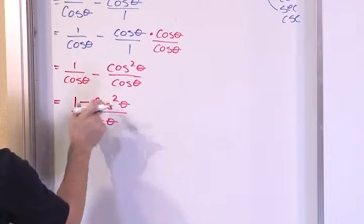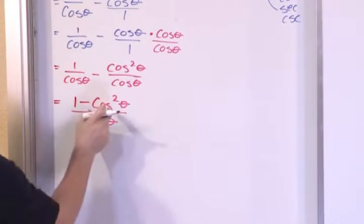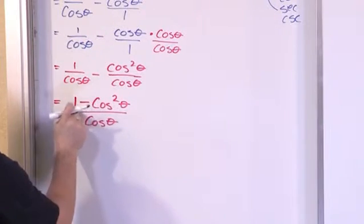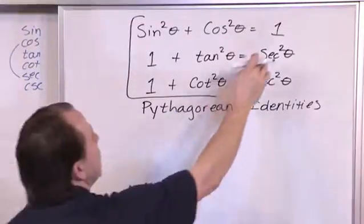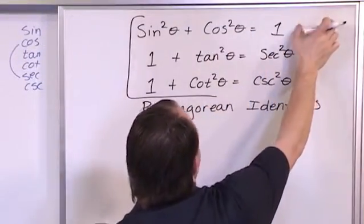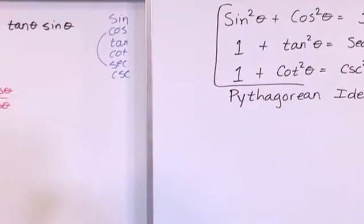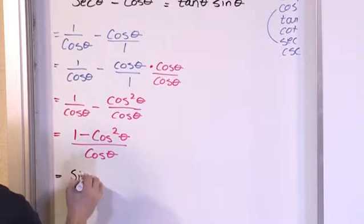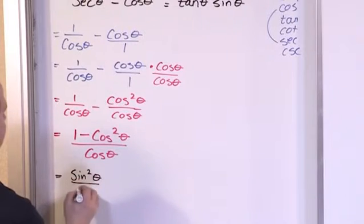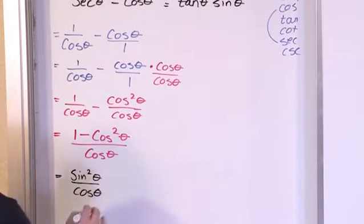So this cosine squared here that I have, notice I have a cosine squared here. I have 1 minus cosine squared in the numerator and we just said that 1 minus cosine squared is equal to sine squared. So 1 minus cosine squared is equal to sine squared theta on the top. Cosine theta on the bottom comes along for the ride.